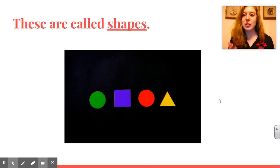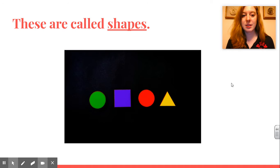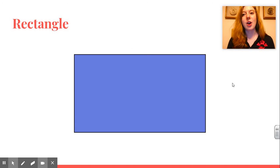So these are called shapes. Our first shape we're going to learn is called a rectangle. Rectangle. So a rectangle has four sides. One, two, three, four.